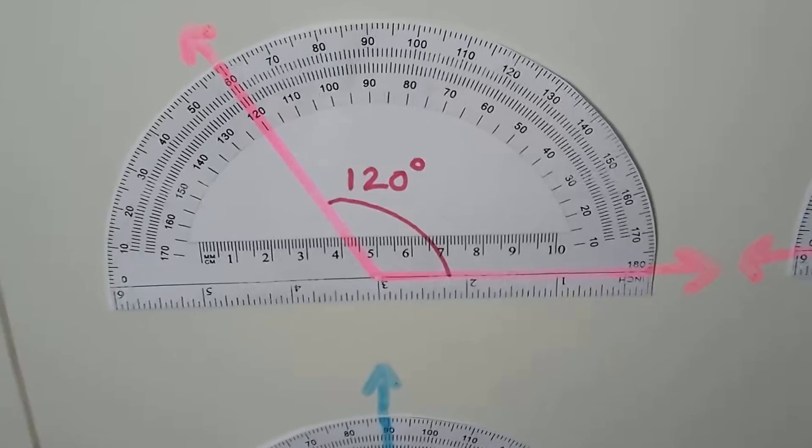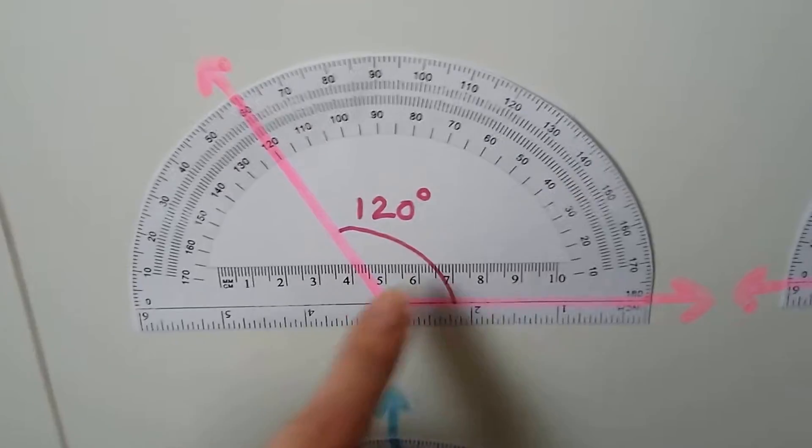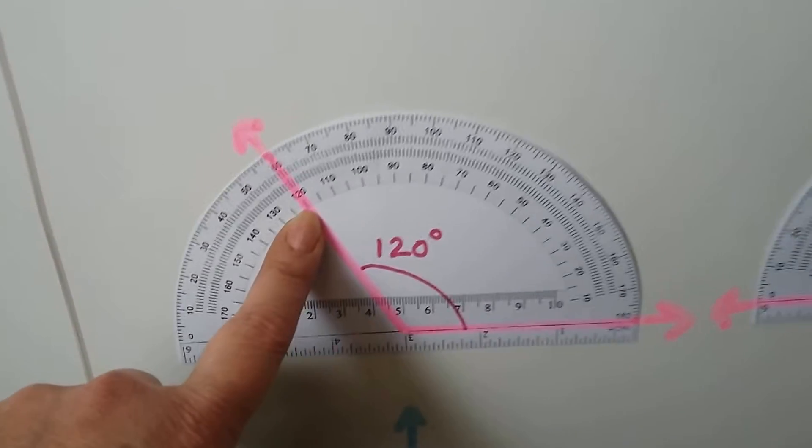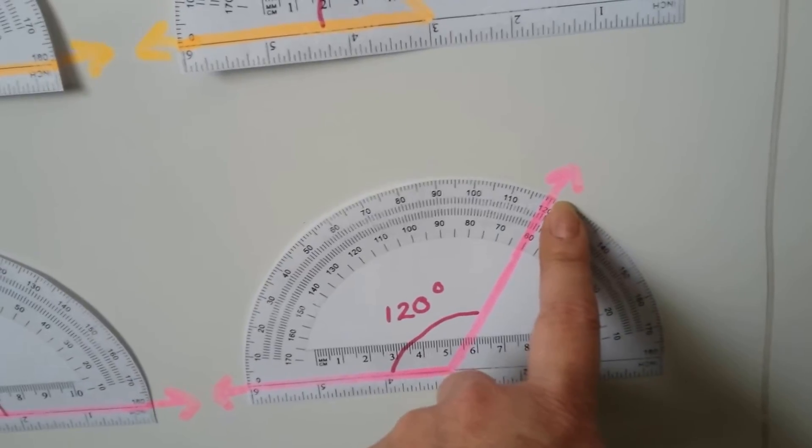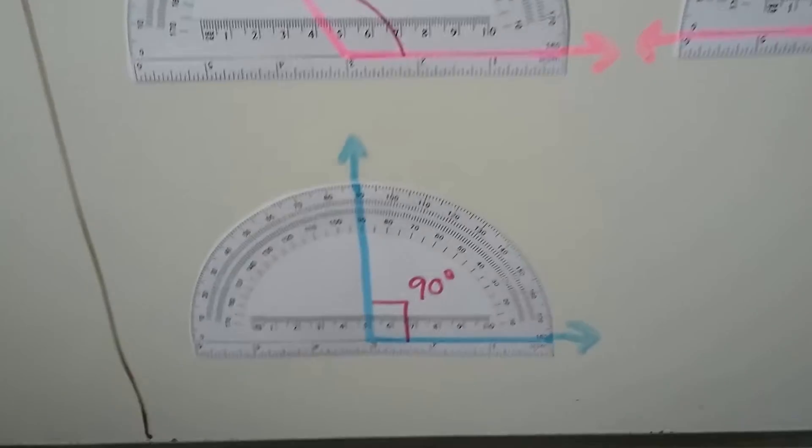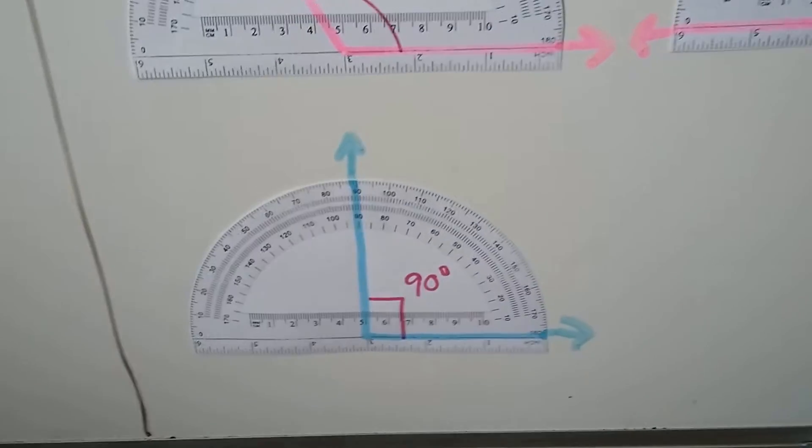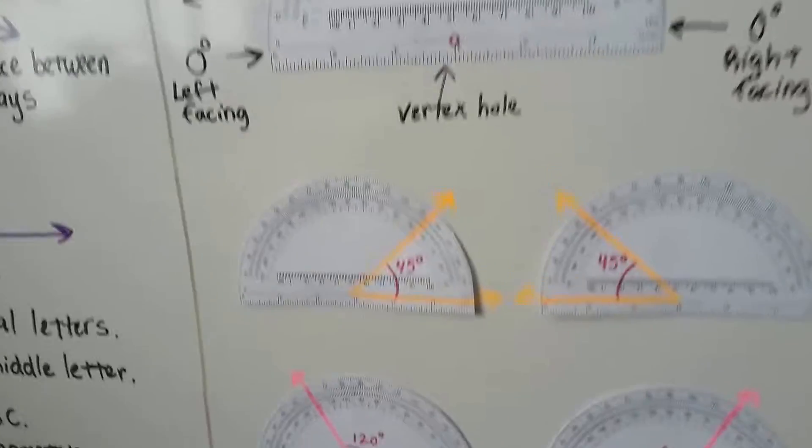So depending on which direction your angle is facing, you're going to use the inside measures or the outside measures. This one is 120 degrees. We use the inside measure because it's opening this direction. If it's opening this direction, we use the outside measures. And when it's a 90-degree angle, it's going to be going straight up and it'll have that little box. That little box tells us it's a right angle. It's 90 degrees.